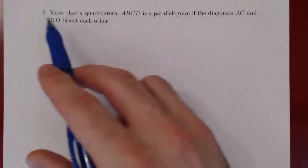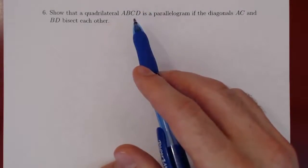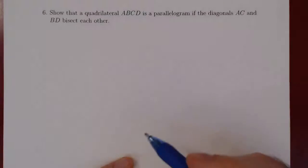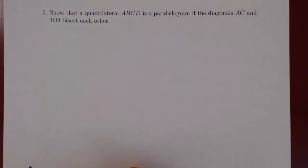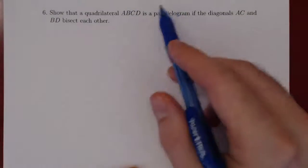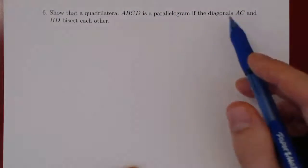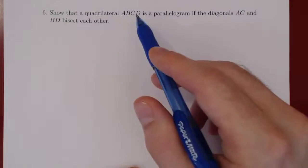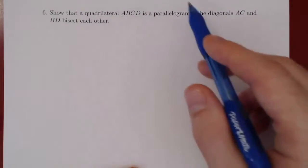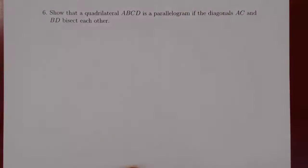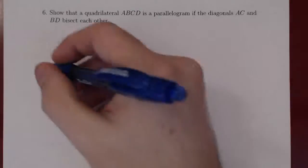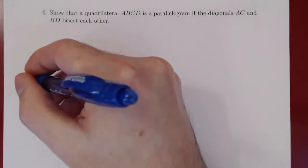The only thing we have here by assumption is a quadrilateral where the diagonals bisect each other. So we can't draw a parallelogram off the bat, because this is what we want to show — that if the diagonals bisect each other, then the quadrilateral ABCD is a parallelogram. I insist on not drawing a parallelogram at first so we don't confuse the assumptions with the things we want to prove. So we can draw an arbitrary quadrilateral.